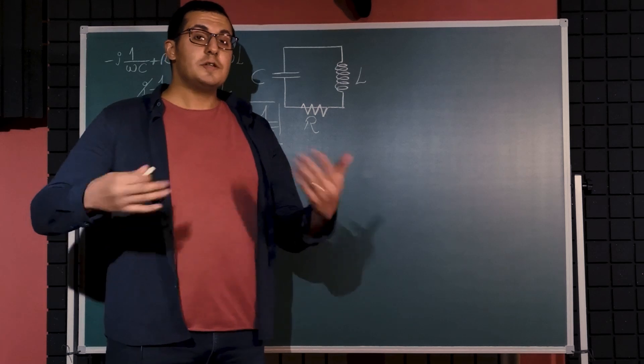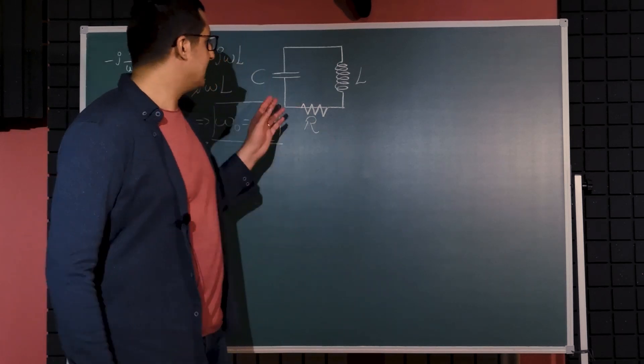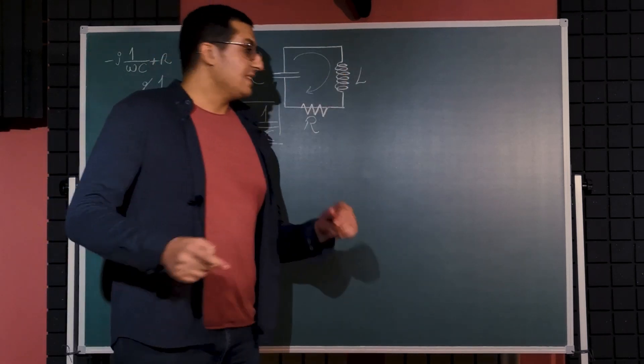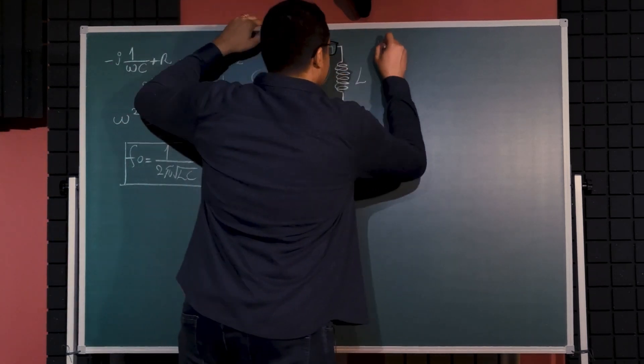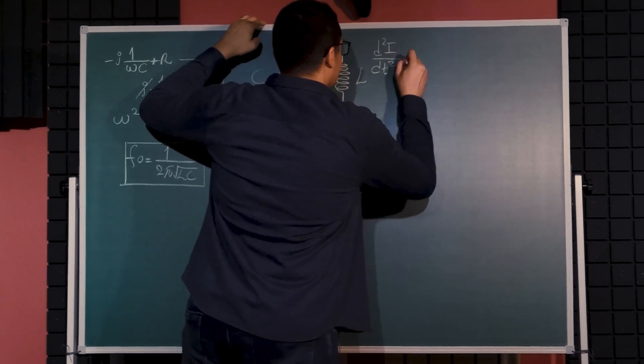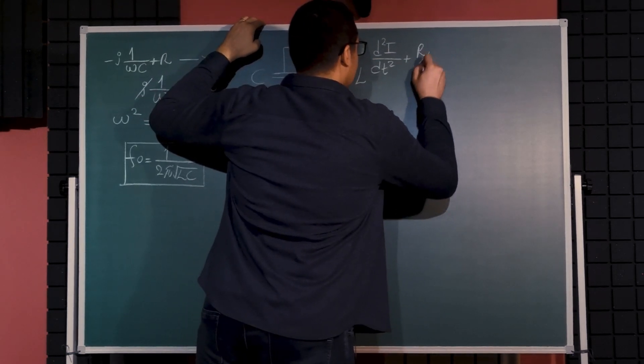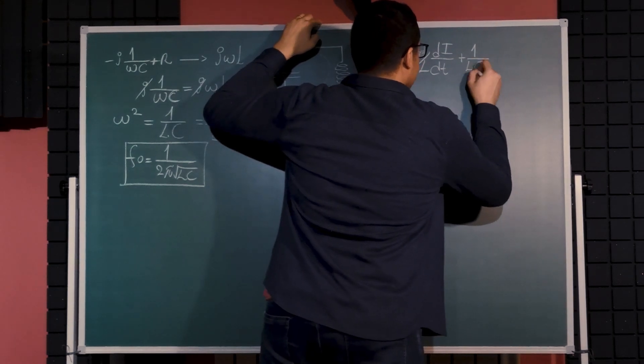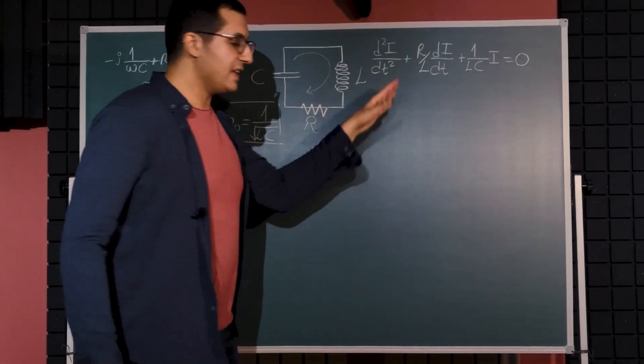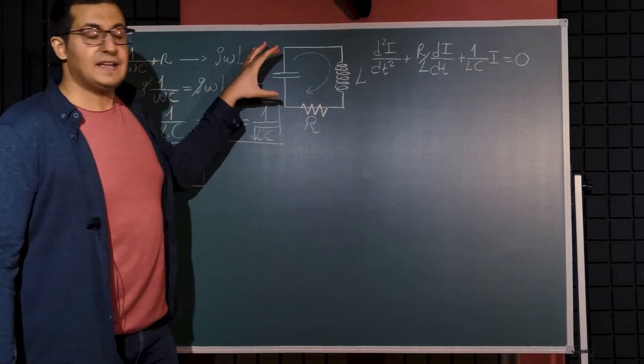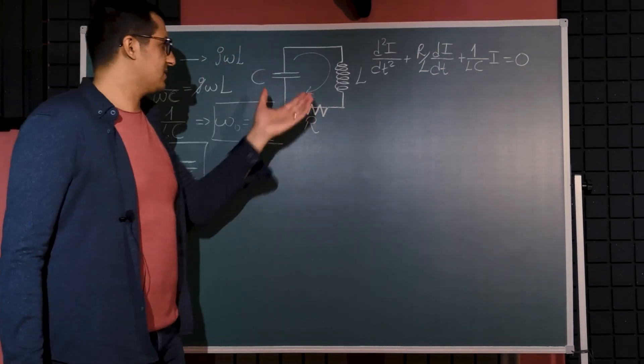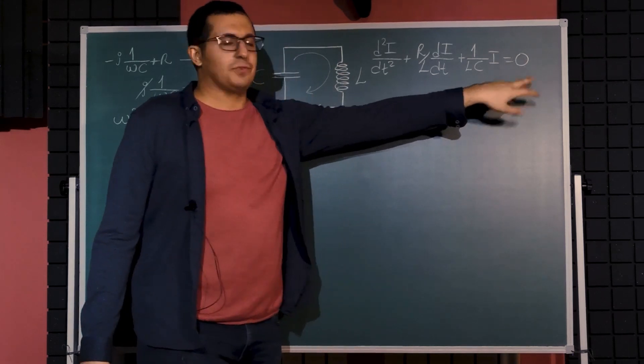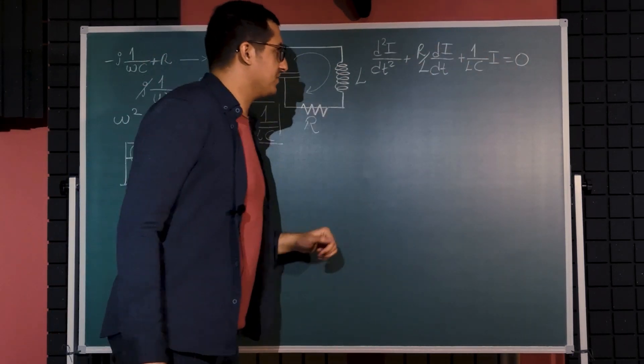Now let's look at what will be the current in this system when it is excited. If we take the KVL around the loop we get a differential equation looking like d²i/dt² + (R/L)(di/dt) + (1/LC)i = 0, because we imagine that we charge the capacitor and let the system run for about some time. As a result we don't have any forcing function or a constant on the other side of the differential equation.